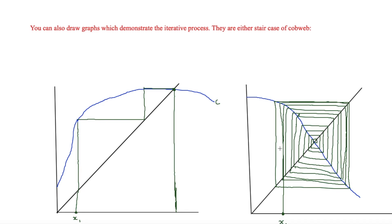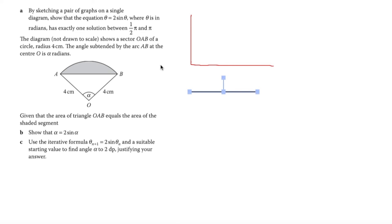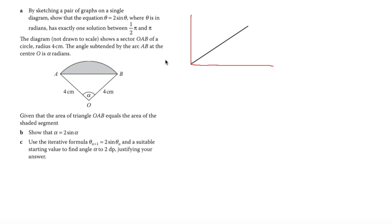In the final question, part A asks us to show by sketching a pair of graphs that θ = 2sinθ has exactly one solution between π/2 and π. We draw y = θ, a straight line, and y = 2sinθ. Since sinθ crosses the x-axis at 2π, we know 2sinθ crosses it at π. The graphs intersect exactly once between π/2 and π.